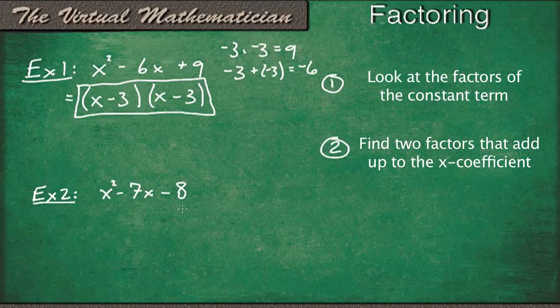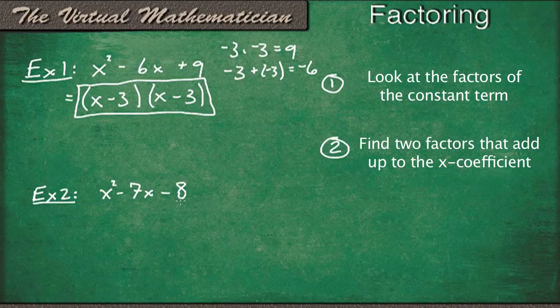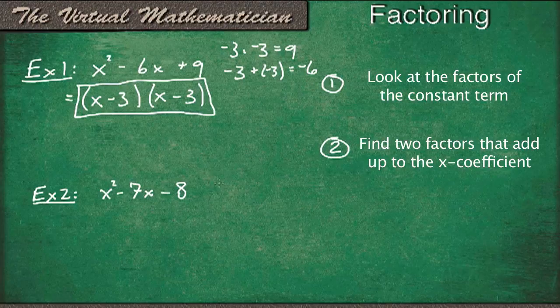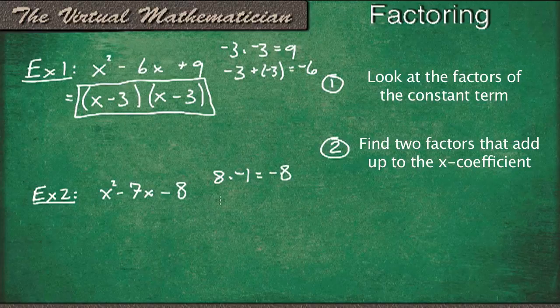So that means that one number is going to be positive and one is going to be negative in order to get this negative 8 here. So let's try 8 and negative 1. Because 8 times negative 1 gives us negative 8. But 8 plus negative 1, well that gives us positive 7. So that's not going to work.